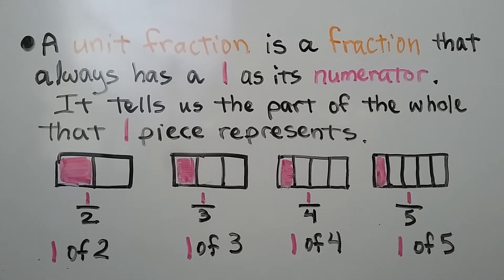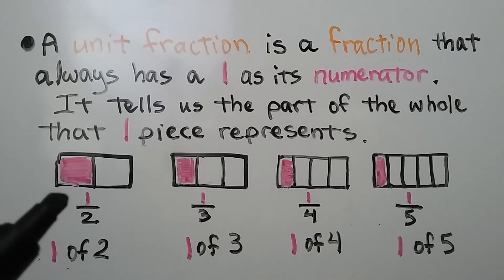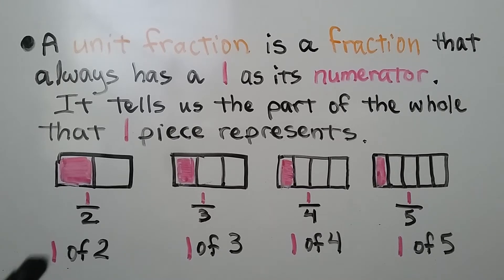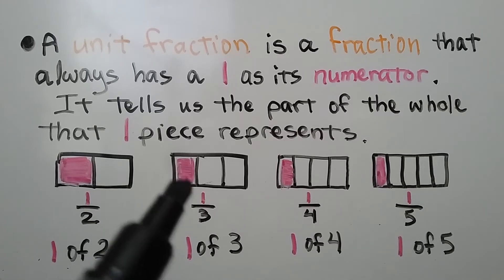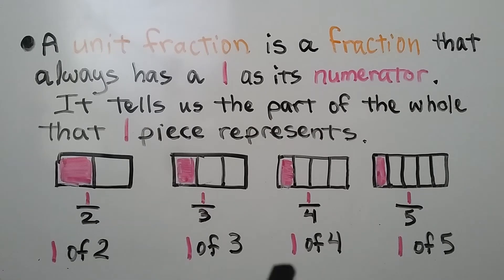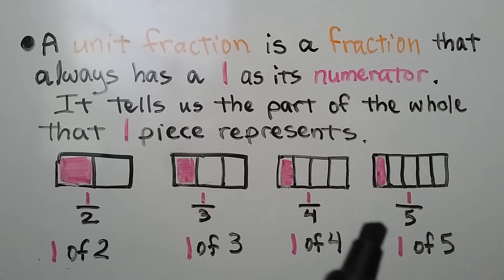A unit fraction is a fraction that always has 1 as its numerator. It tells us the part of the whole that one piece represents. We have 1 half — we have 1 for the numerator, it's a unit fraction. It means we have 1 of 2 parts. 1 third is 1 of 3 parts. 1 fourth is 1 of 4 parts. And 1 fifth is 1 of 5 parts.